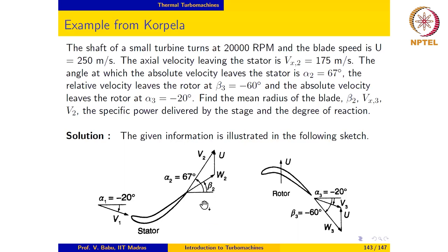Now at the exit of the stator, alpha is plus 67. So that is the absolute velocity leaving the stator. The velocity diagram at exit to the stator would look like this. This is C2 and this is u. So C2 plus u equal to v2. This is the blade angle of the stator at exit, beta2.